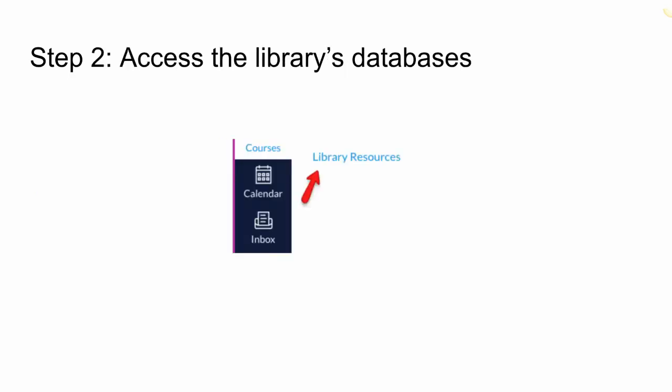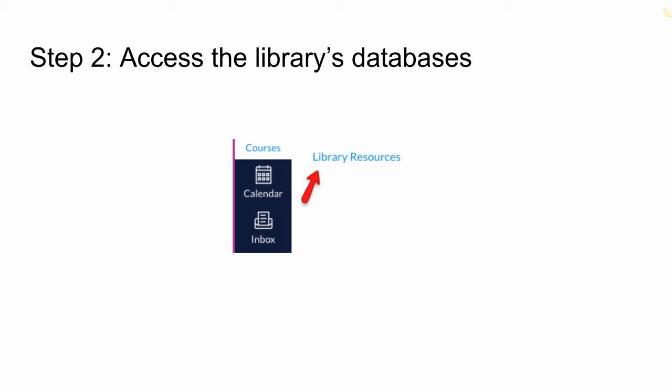The second step is to access the library's databases. Go to the Library Resources link in your Comp 1 Canvas space. Remember that when you are off campus, you will be asked to enter your Massasoit username and password for database access.